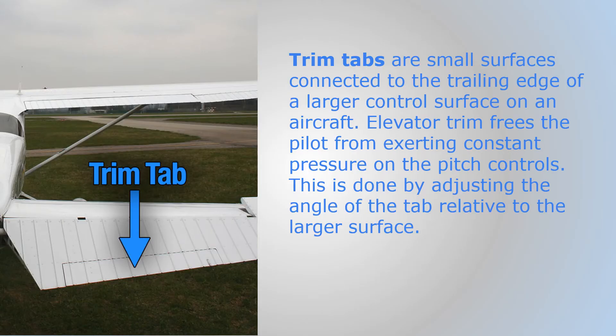Trim tabs, such as the elevator trim tab seen here to the left, help reduce pilot workload by reducing the pressure needed to be applied to maintain a specific attitude, heading, or bank angle. This is accomplished by controlling the small trim tab from within the cockpit, which in turn controls a larger control surface.